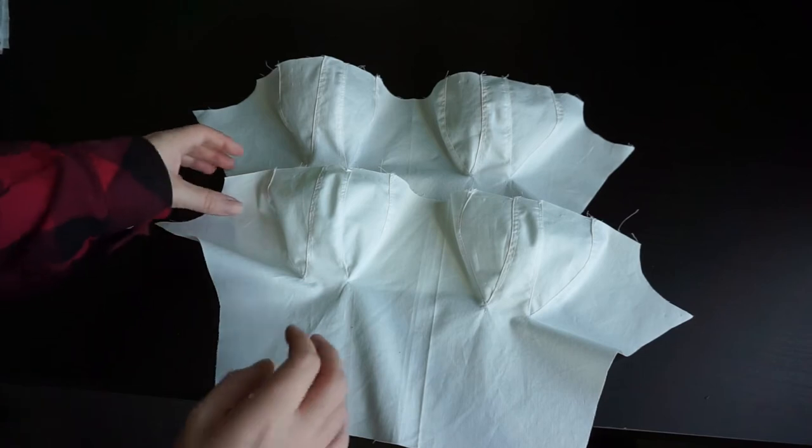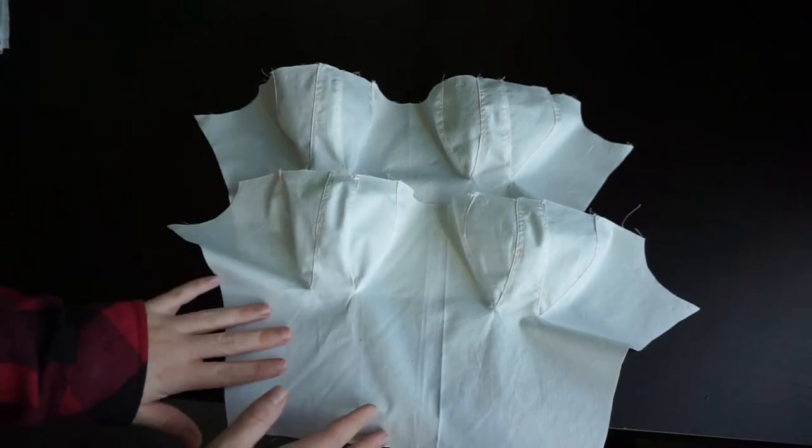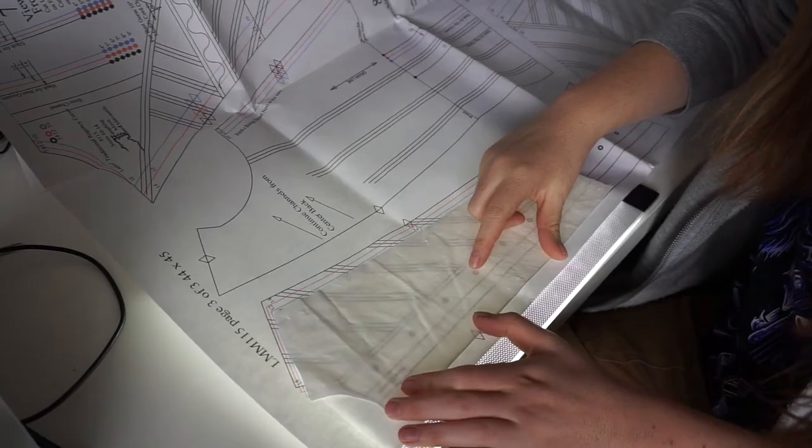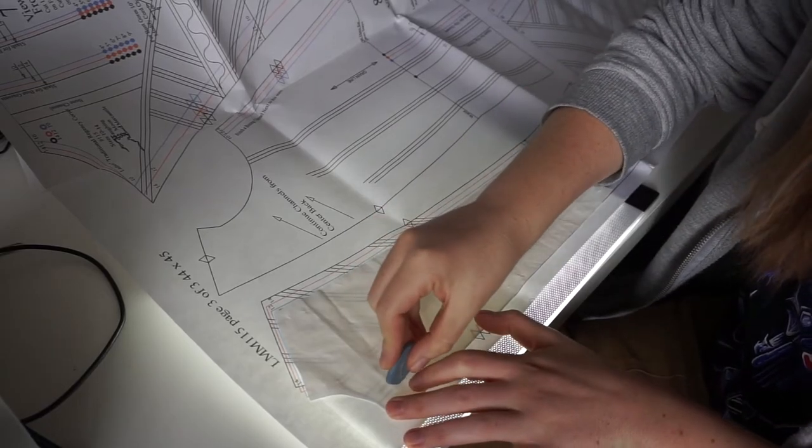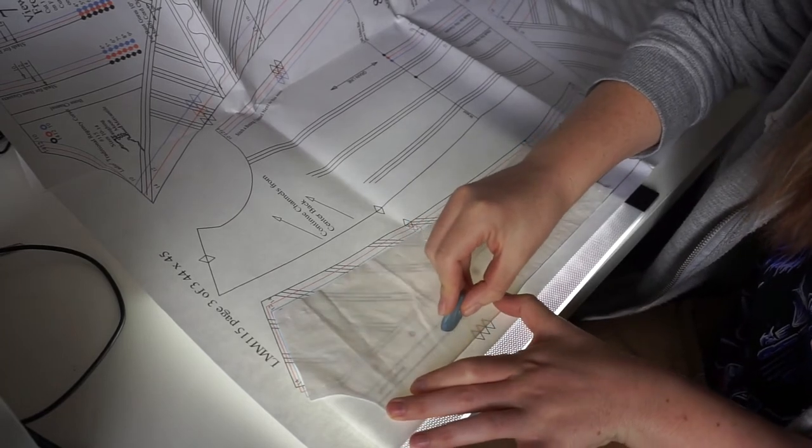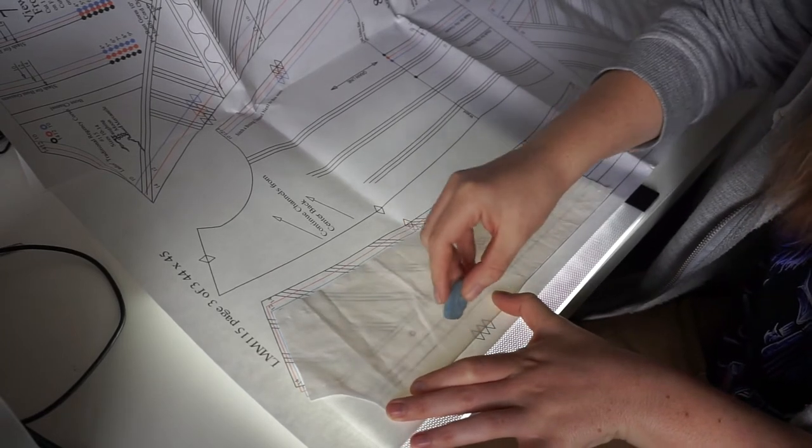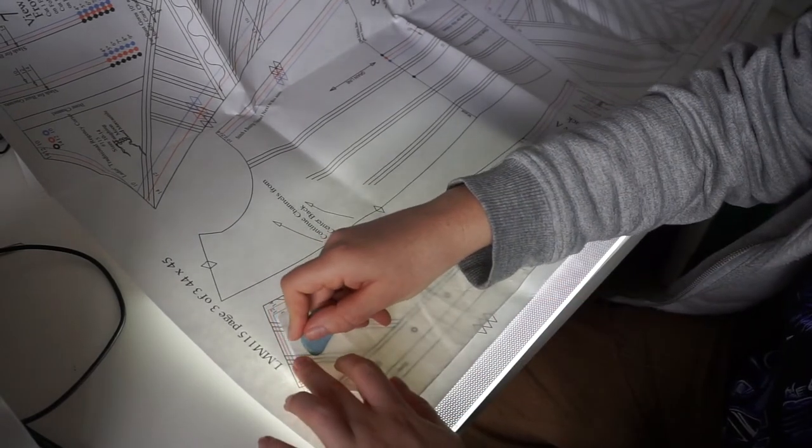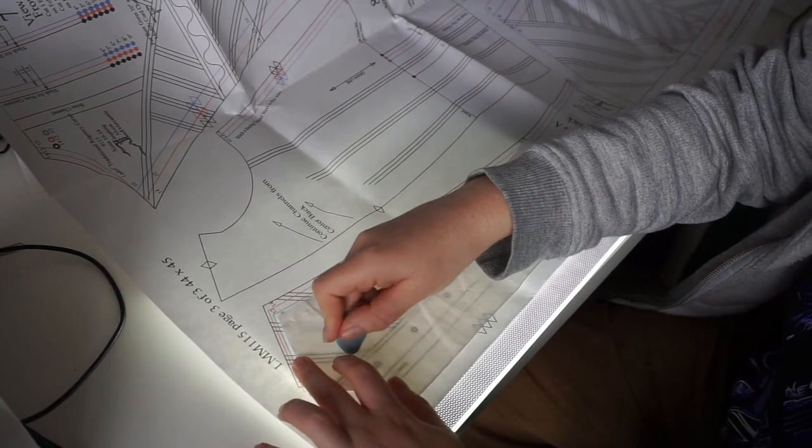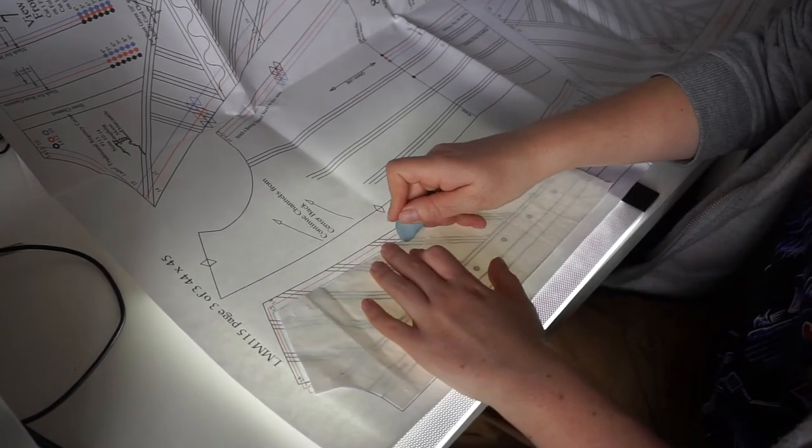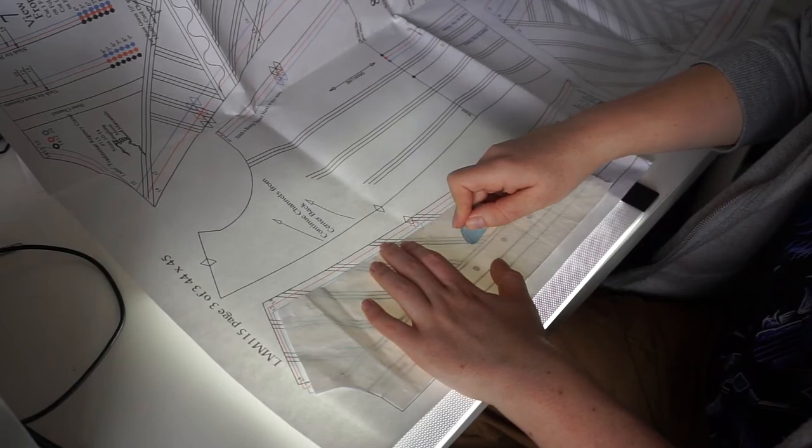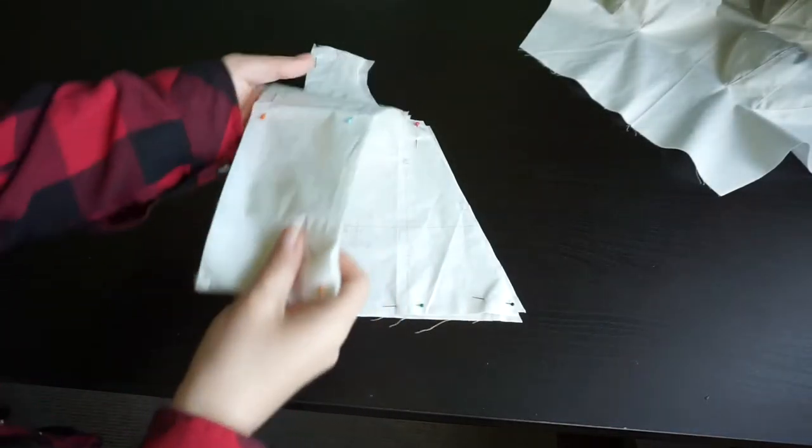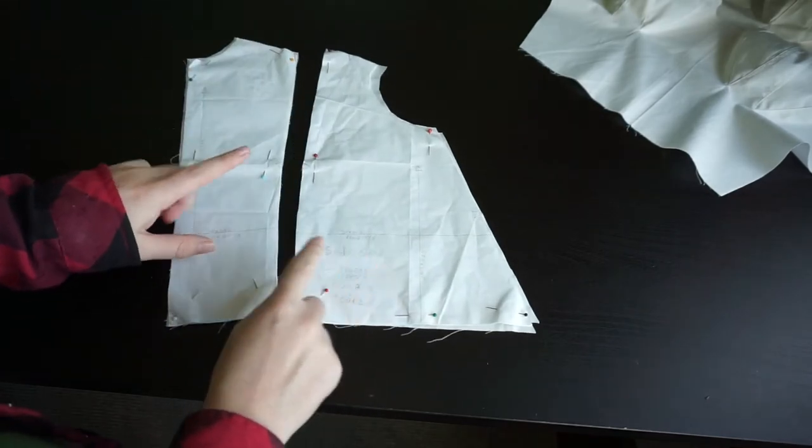This is the moment where I trace all the markings that are relevant for the boning and the cording onto all of the panels. For each of these I trace with tailor's chalk onto the lining piece on the side that will end up on the inside of the stays. And next up we're going to work on the back of the stays by attaching the side and the back together.